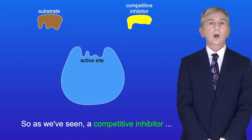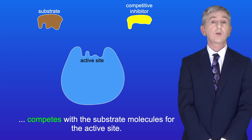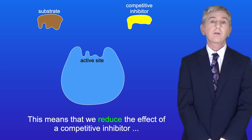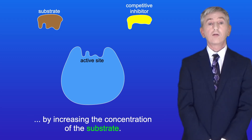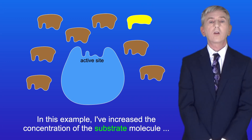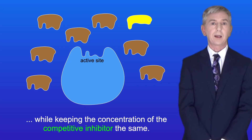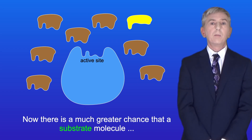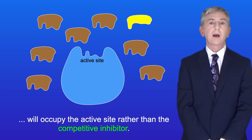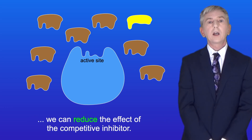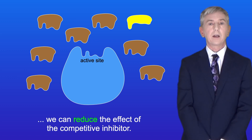A competitive inhibitor competes with the substrate molecules for the active site. This means that we can reduce the effect of a competitive inhibitor by increasing the concentration of the substrate. If we increase the concentration of the substrate molecule while keeping the concentration of the competitive inhibitor the same, there is now a much greater chance that a substrate molecule will occupy the active site rather than the competitive inhibitor. So by increasing substrate concentration, we can reduce the effect of the competitive inhibitor.